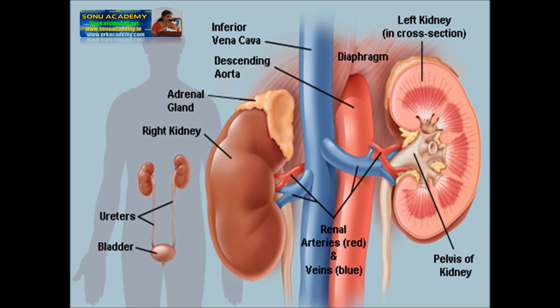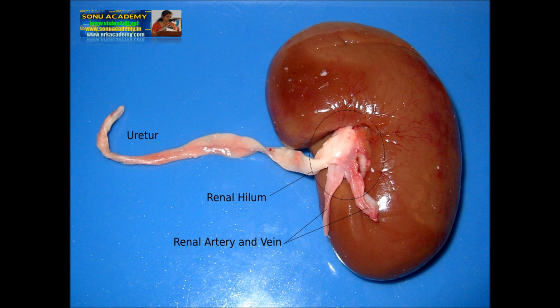Points to remember from this lesson: Kidneys are the chief excretory organs in man. A pair of kidneys, a pair of ureters, and a urinary bladder are present in the human body. The kidneys are bean-shaped and dark red in color. On top of each kidney, an adrenal gland is present, which is an endocrine gland and has nothing to do with excretion. On the concave edge of the kidney is the notch called the hilum.